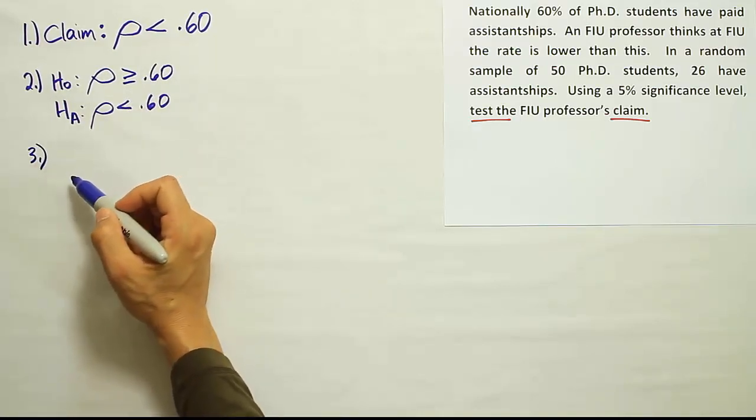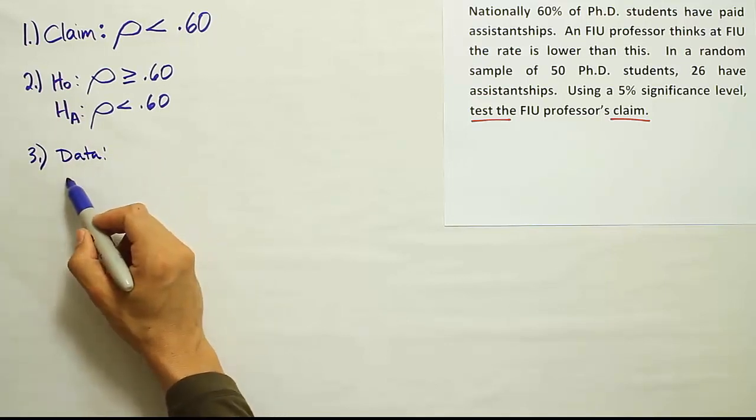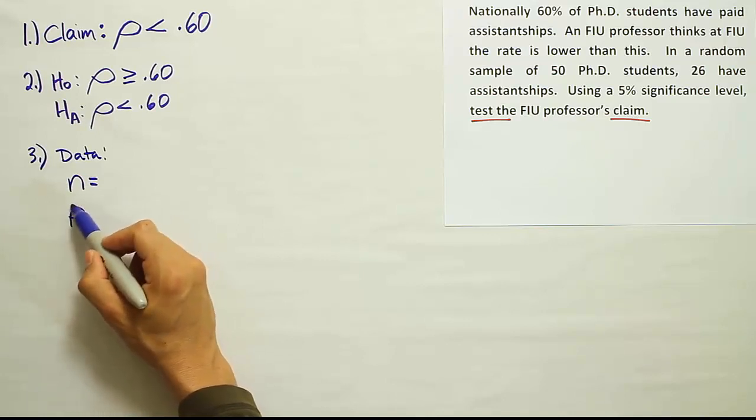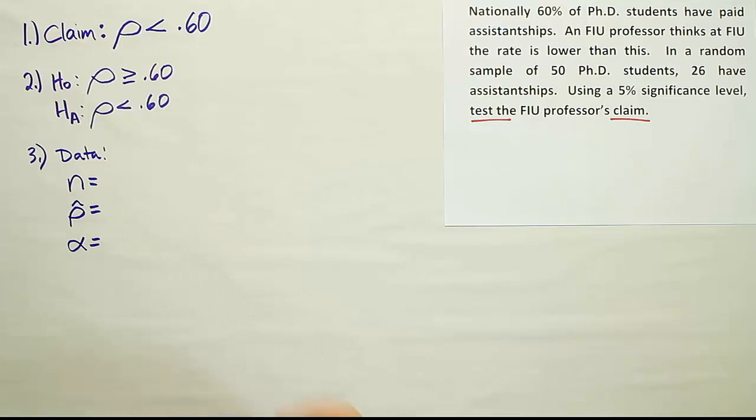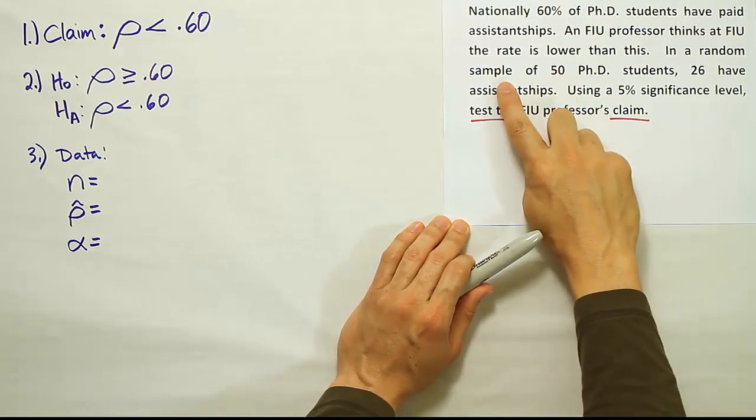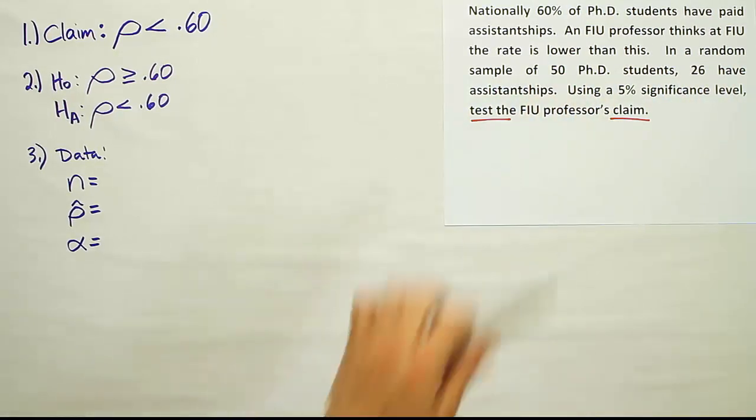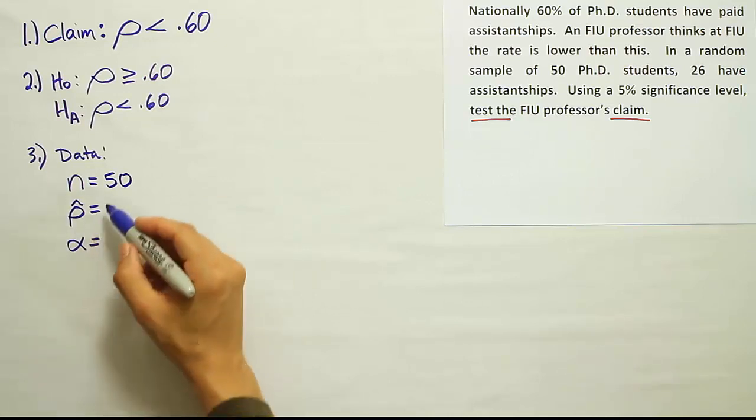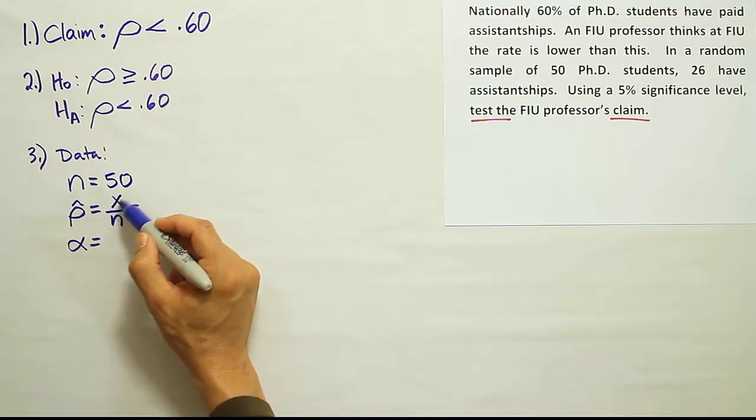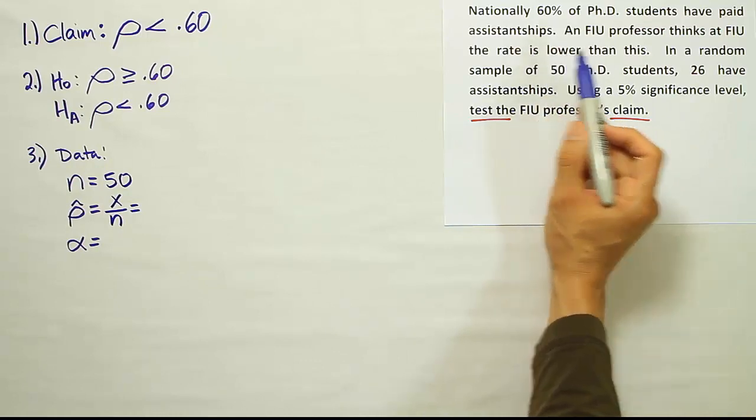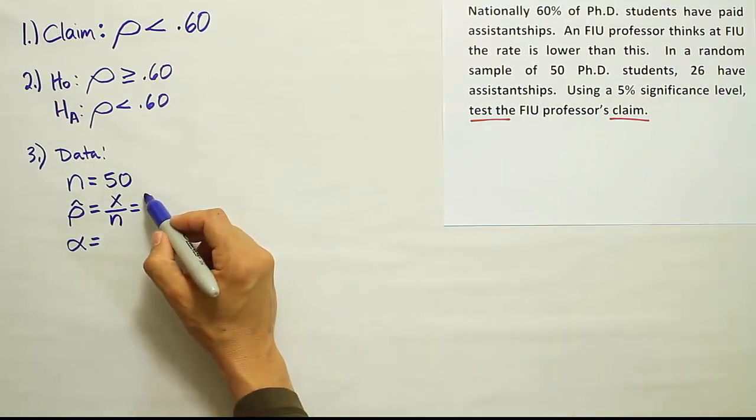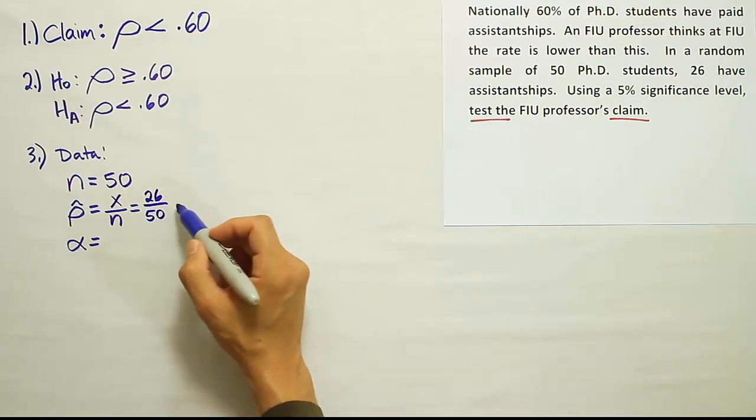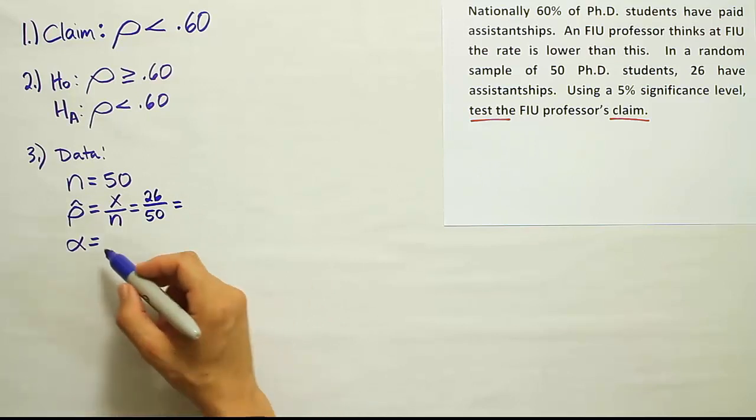From there, we're going to record the data in the problem. So our data step involves collecting usually the following information: N, P hat, and a significance level alpha. So let's go through the problem and identify these values. In a random sample of 50 PhD students, so our N is 50. It says 26 have assistantships. Now recall that P hat is X over N by definition, where X is the number of subjects having the trait we're looking for. In this case, we're talking about the percent that have paid assistantships. If 26 have assistantships, that's our X, 26, out of the total surveyed of 50.